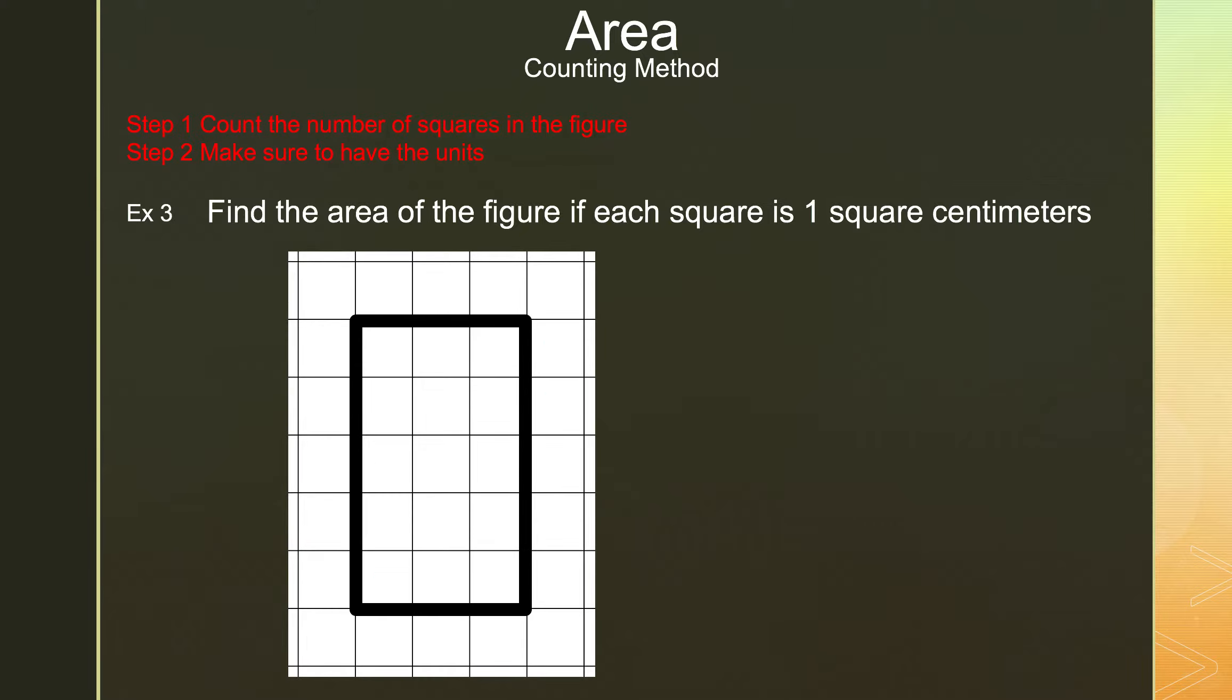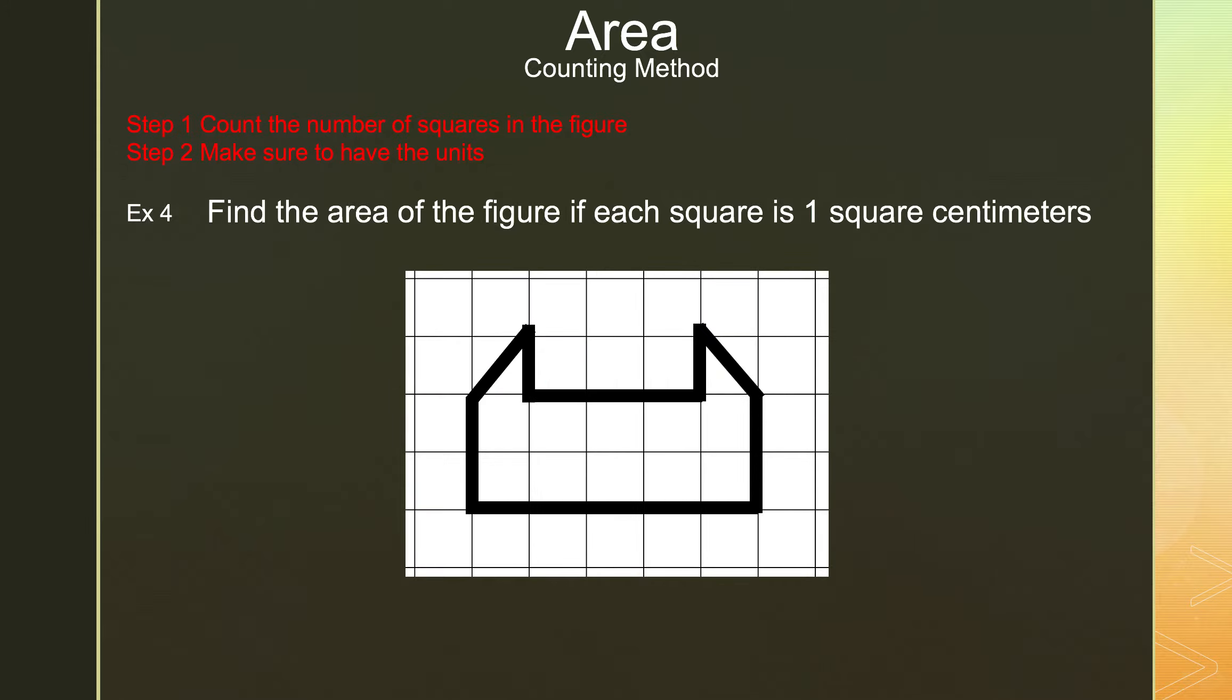Let's take a look at this example. It's a little bit bigger, so we're going to count a little bit more. Let's start counting: one, two, three, four, five, six, seven, eight, nine—I hope you're counting with me—ten, eleven, twelve, thirteen, fourteen, and finally fifteen. Make sure to have our units: the area is equal to fifteen square centimeters or fifteen centimeters squared.